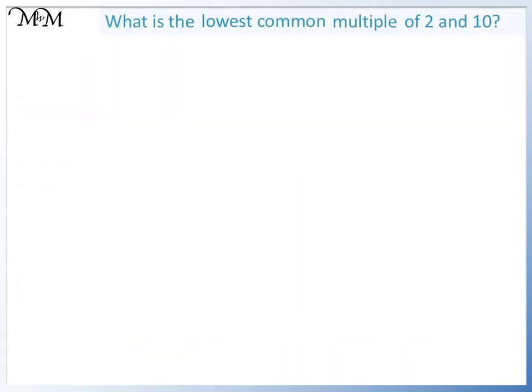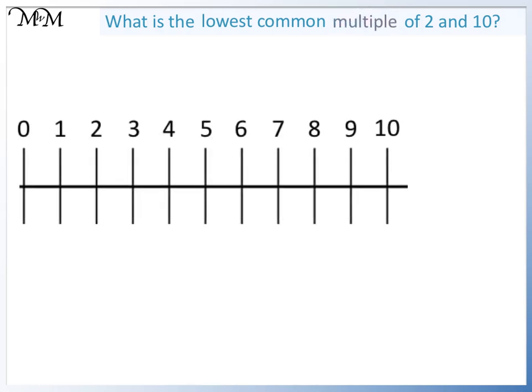What is the lowest common multiple of 2 and 10? The multiples of 2 are 2, 4, 6, 8 and 10.